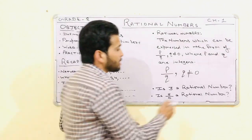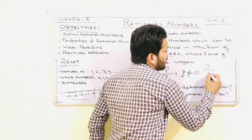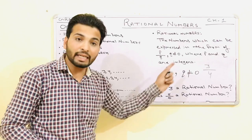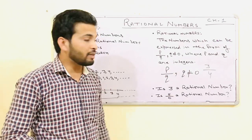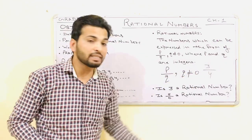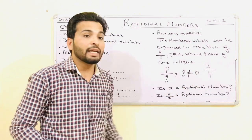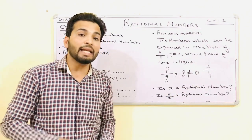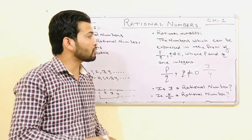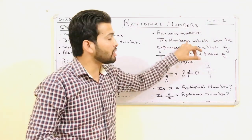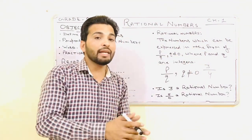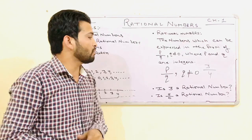For example, 3 upon 4. What is the value of P here? 3 — and 3 is an integer. What is the value of Q? 4 — Q is also an integer. Integers can be negative or positive, so rational numbers can be positive or negative as well.